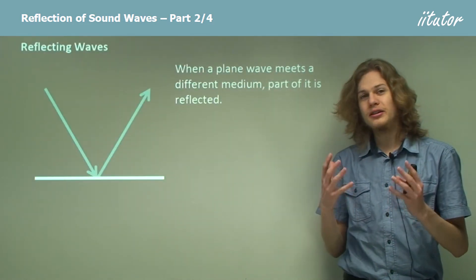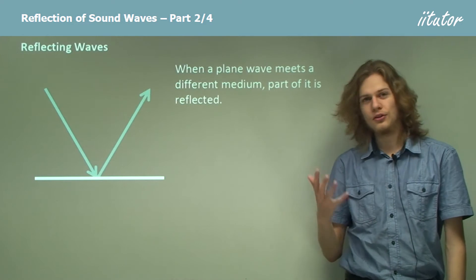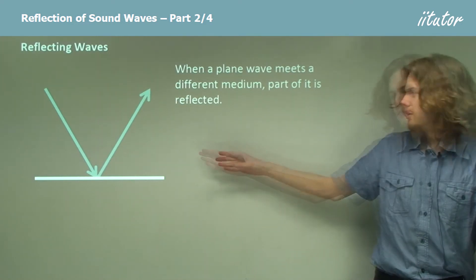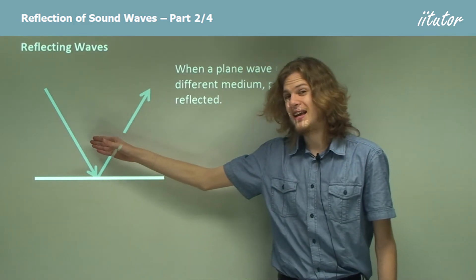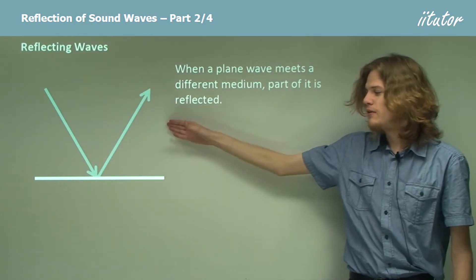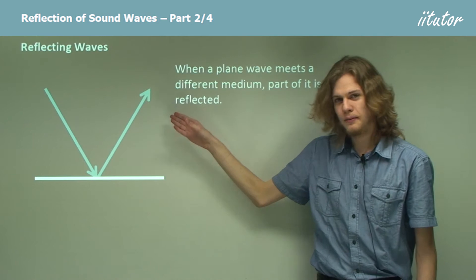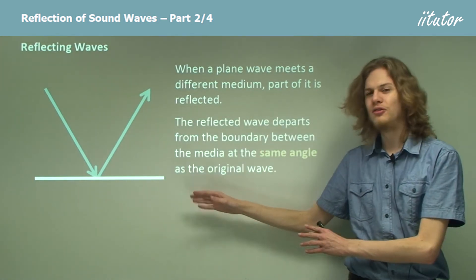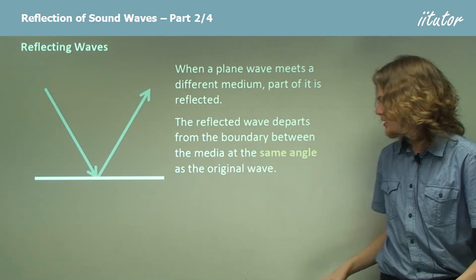Now when a plane wave meets a different medium, part of it will be reflected as we mentioned before, and we can see that in this diagram over here. The wave on the left is incident and the wave on the right is reflected. Now the reflected wave will end up coming away from the boundary at the same angle as the incident wave meets it.